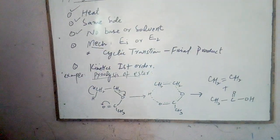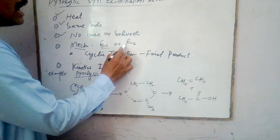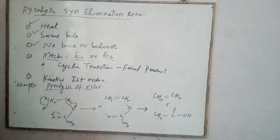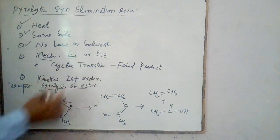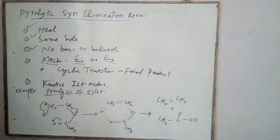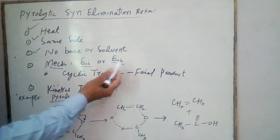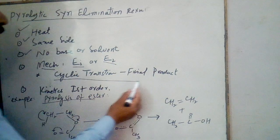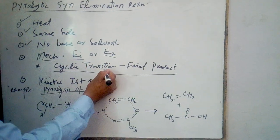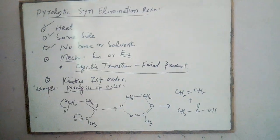Next is the mechanism of the pyrolytic syn elimination reactions. Its mechanism can be carried out by Ei (internal elimination) or by E2. The reaction can be E2 or carried out with a cyclic transition state. So a cyclic transition state will be involved.